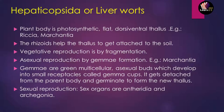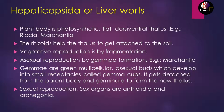Let us talk about Hepaticopsida, or Liverworts, in detail. The plant body of liverworts is photosynthetic, flat, and contains a dorsiventral thallus — for example, Riccia and Marchantia. They have rhizoids which help the thallus attach to the soil. Vegetative reproduction occurs by fragmentation, and asexual reproduction is through gemma formation. A gemma is a single cell or a mass of cells — a modified bud of tissue — that detaches from the parent and develops into a new individual.